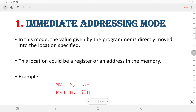Coming to the first one, that is immediate addressing mode. In this mode, the value given by the programmer is directly moved into the location specified. This location can be a register or an address in the memory. Let us take an example: MVI A, 1AH. Here the data 1AH is given by the programmer.